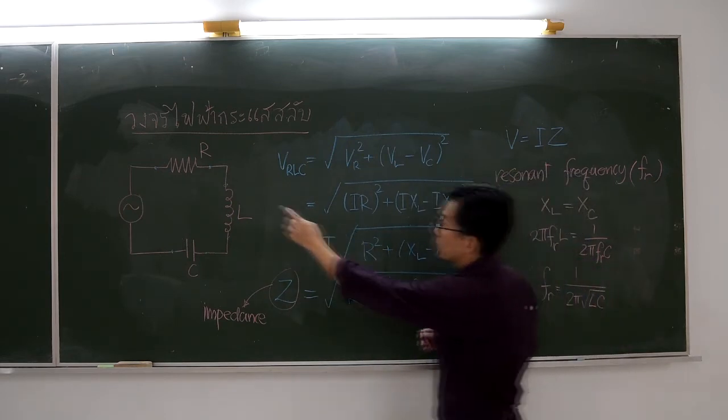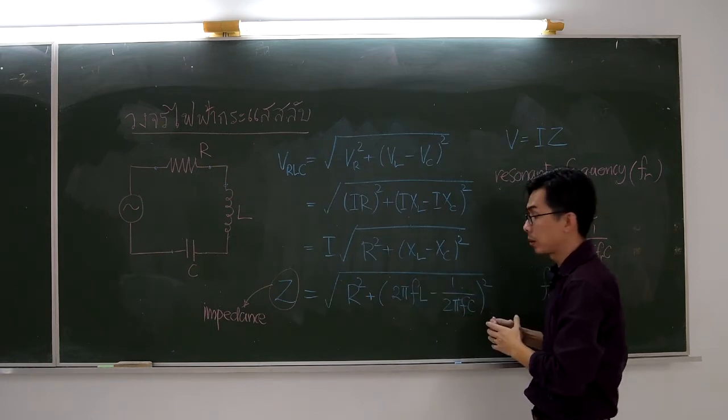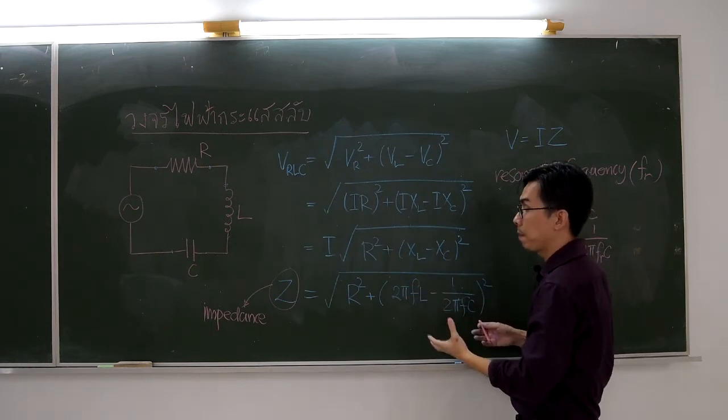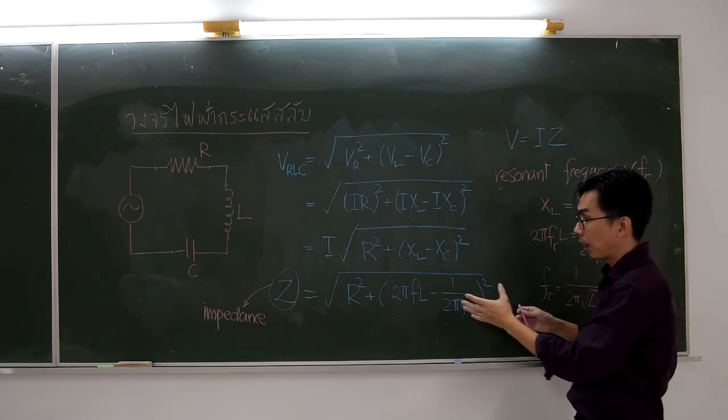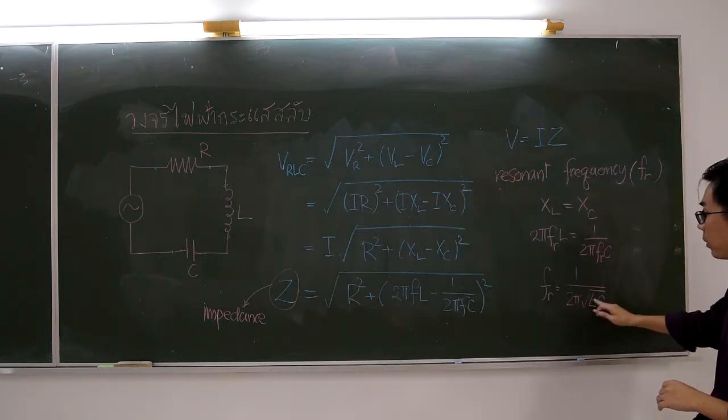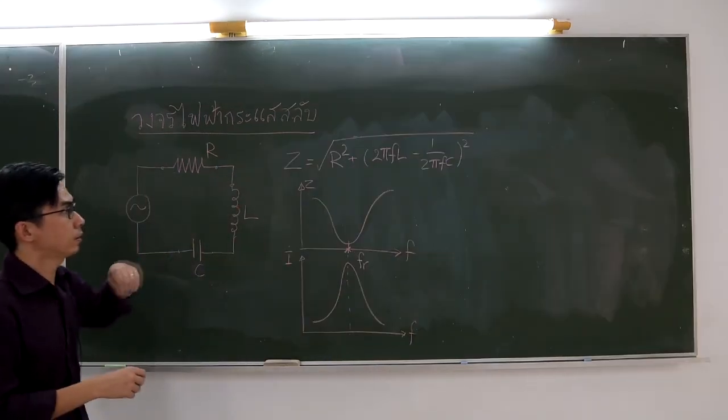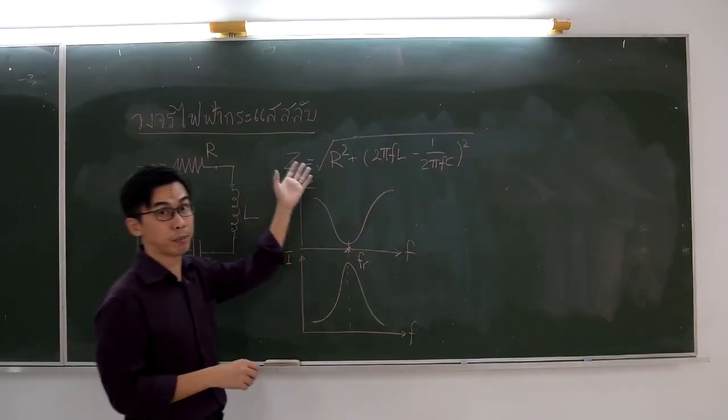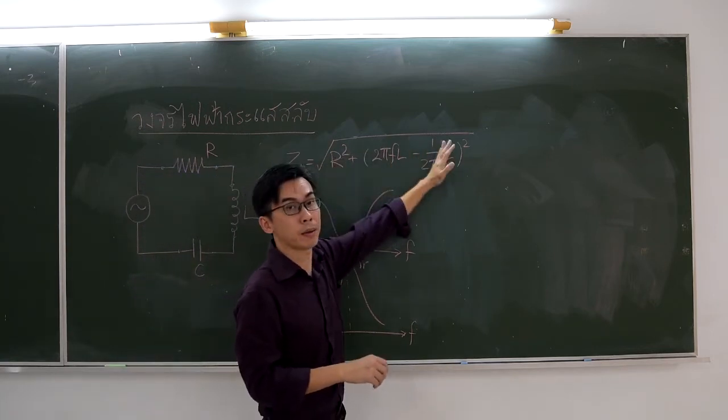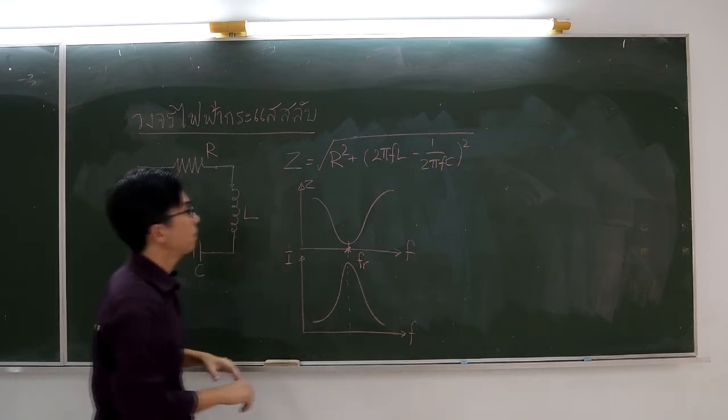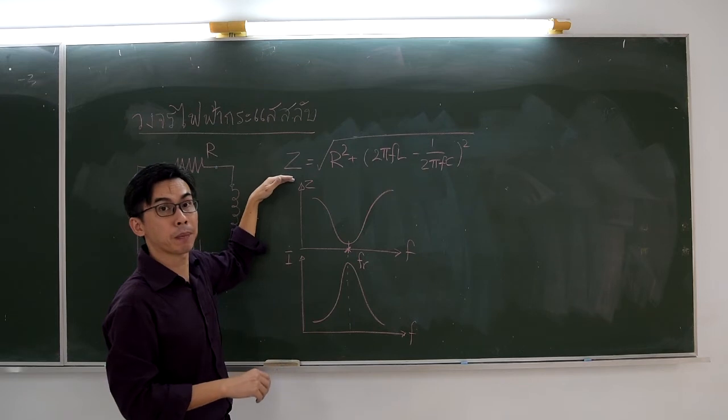And this condition leads to the resonance frequency equal to 1 over 2π times the square root of L times C. As mentioned before, the impedance varies as we change the frequency. For small frequencies, XC will dominate.